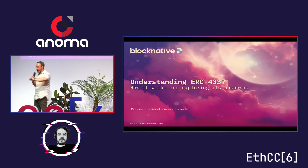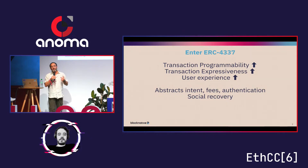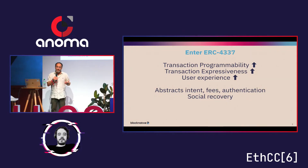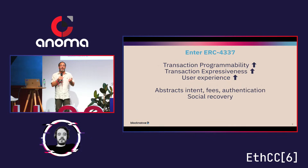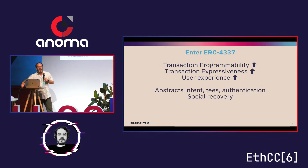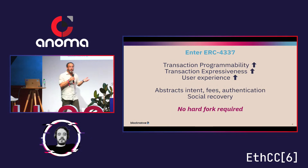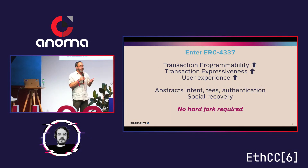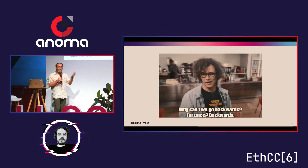What do we know about 4337? It fundamentally makes transactions programmable and expressive, which we believe will massively improve user experience. It does so by abstracting away gas fees, authentication, and enabling social recovery of keys, so users don't need to worry about managing private keys on their own. And it has this funny property: no hard fork required — it's an ERC, not an EIP. The question is how do you do all of that without changing the network?